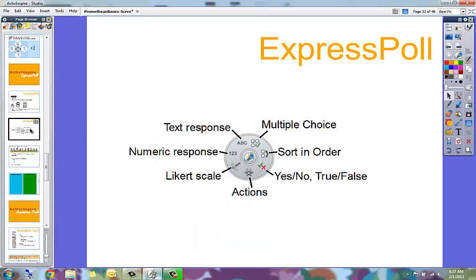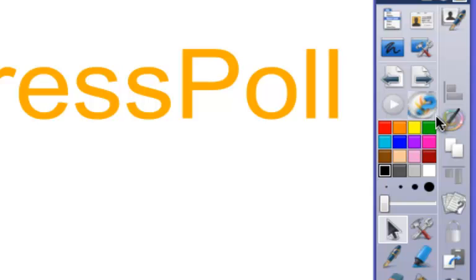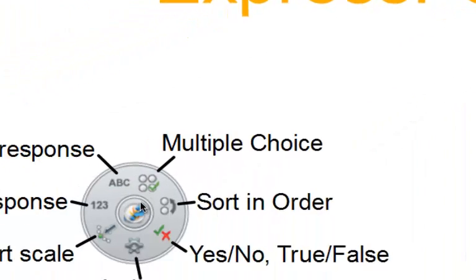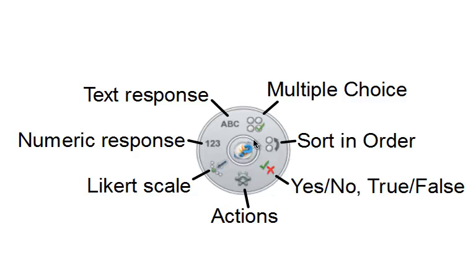Basically what you're going to be doing is using the Express Poll wheel. This is the button - it's a circle with a blue question mark on it. When you click it, the wheel is going to appear and the wheel has a number of different options.